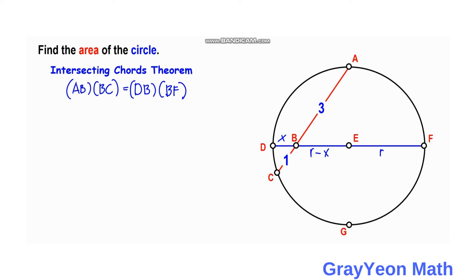We substitute the lengths: AB is 3, BC is 1, DB is X, and BF is 2R minus X. Simplifying, we have 3 equals 2XR minus X squared. We can write this as 2XR equals X squared plus 3, and we set this aside.